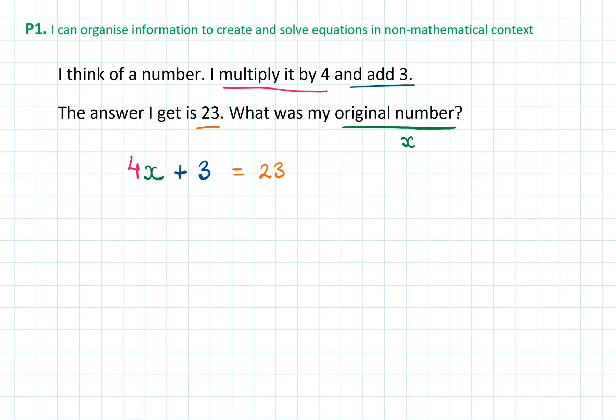To solve this, we can use our bar modelling. Let's do that. We have 4 lots of x. We add 3 to this, and the answer equals to 23.